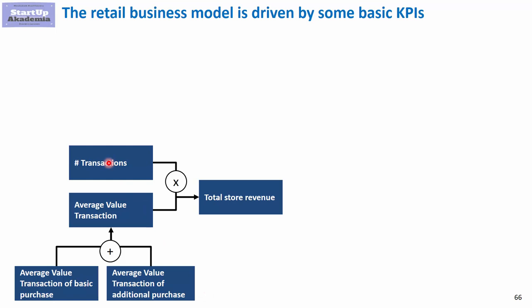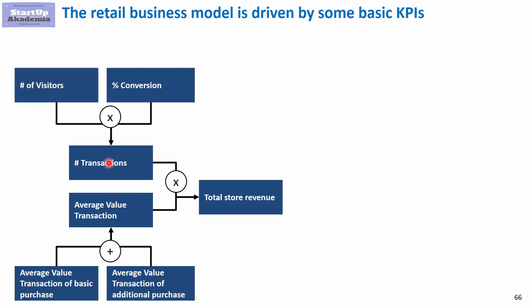The number of transactions depends on two things: the number of visitors and the conversion rate. This leads us to the total revenue, where the key metrics are number of visitors, conversion, average value of the basic transaction, and additional purchases — these drive the whole result.